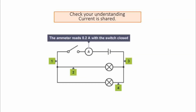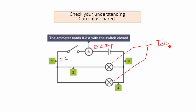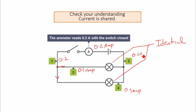Let's apply our understanding based on the three rules. The first one says that current is shared, so the ammeter reads 0.2 amperes here. At point A1, the current is coming around here so it's still going to be 0.2. However, assuming both bulbs are identical and have the same resistance, the current splits equally — so at each branch it's going to be 0.1 amperes. They then join back up, making that point 0.2 amperes again.